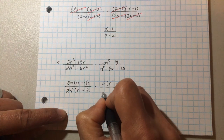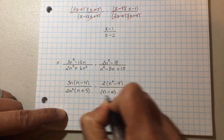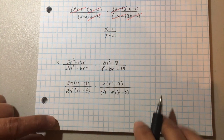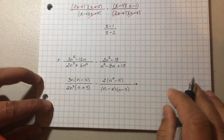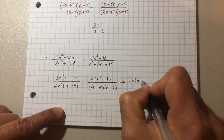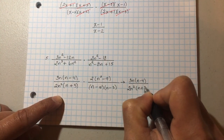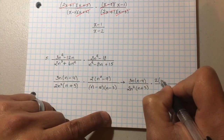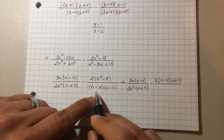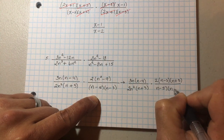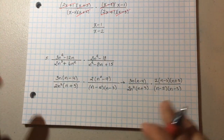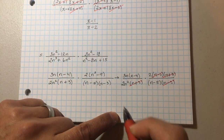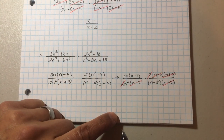For this next part: common factor is two, leaving n squared minus nine. Factor the bottom: n minus five and n minus three. Now n squared minus nine is a difference of perfect squares, so it factors into n minus three and n plus three. So rewriting: we have 3n times n minus four on top, then 2n squared times n plus three, then 2 times n minus three times n plus three, and on the bottom n minus five times n minus three.